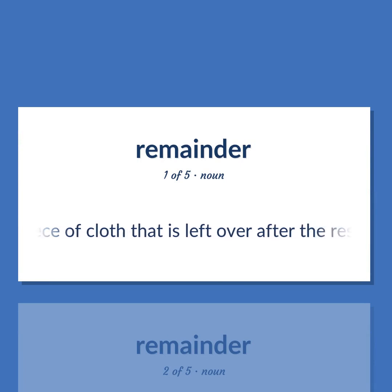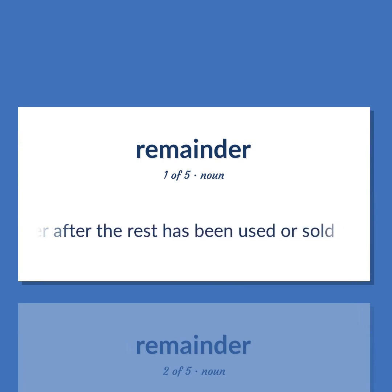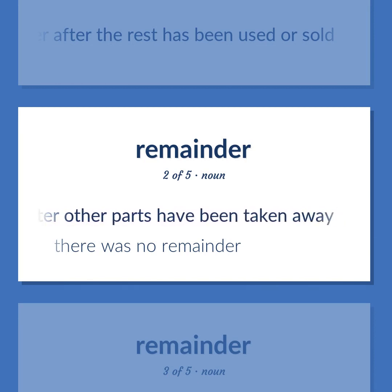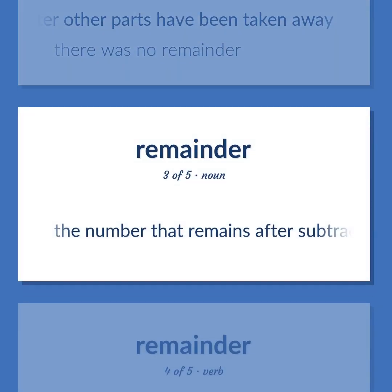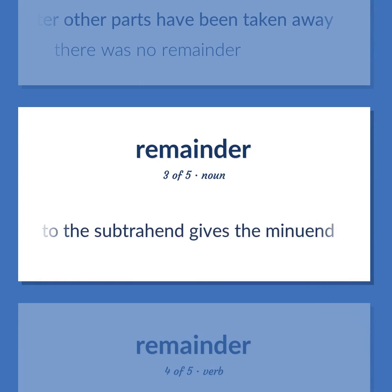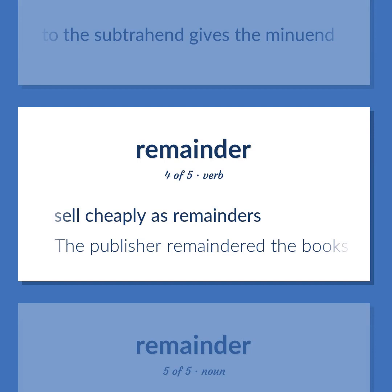Remainder: A piece of cloth that is left over after the rest has been used or sold. Something left after other parts have been taken away. There was no remainder. The number that remains after subtraction; the number that, when added to the subtrahend, gives the minuend. Sell cheaply as remainders.